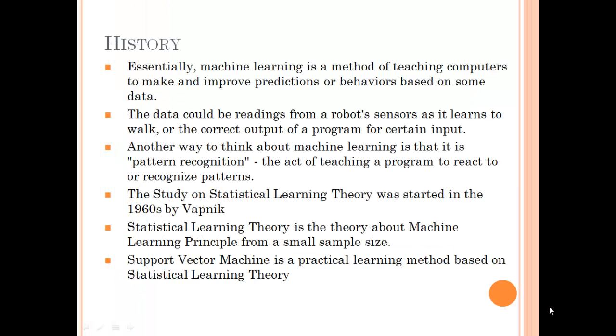Coming to the history. Machine learning is a method of teaching computers to make and improve predictions or behaviors based on some data. It can also be defined as a field that involves computers and their ability to acquire and integrate knowledge automatically.